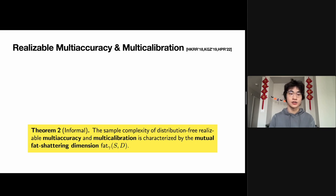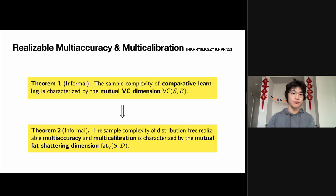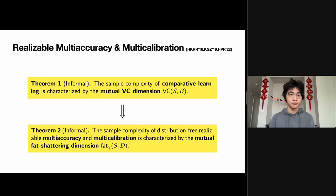In this paper, we show that the sample complexity of distribution-free realizable multi-accuracy and multi-calibration is characterized by the mutual fat-shattering dimension of the two hypothesis classes S and D. This result solves an open problem in our earlier paper with Omer Reingold, and we proved this result as an application of our sample complexity characterization for comparative learning. I would like to clarify that even when Theorem 1 is given, our proof of Theorem 2 is still non-trivial and requires a lot of work.